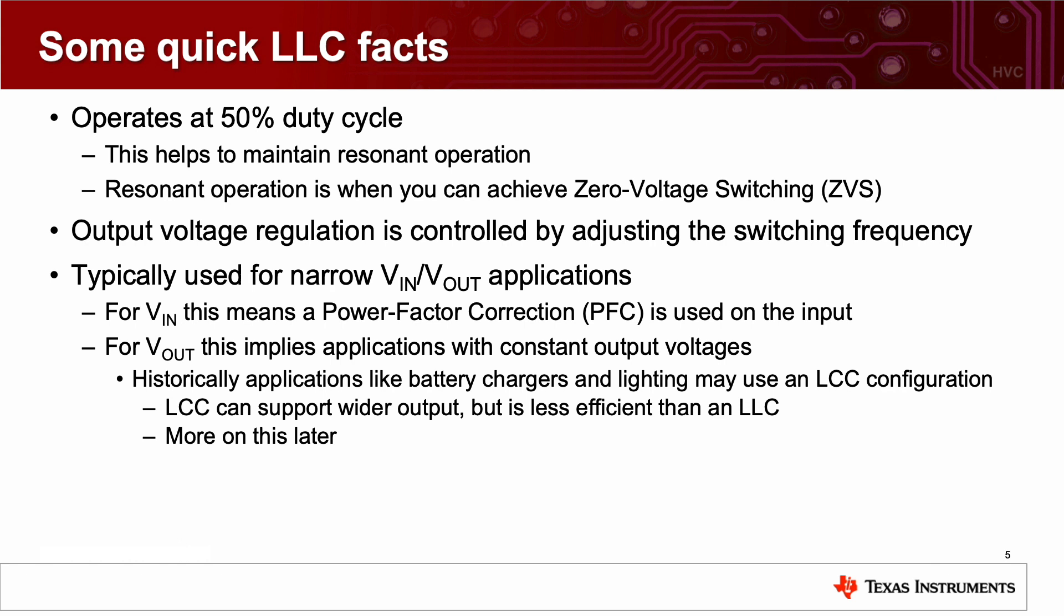For VIN, this means a power factor correction or PFC is used on the input. And for VOUT, this implies applications with fairly consistent constant output voltages. Historically, applications like battery chargers, lighting may switch to an LCC configuration. LCC can support a wider output range, but is less efficient than an LLC topology. I'll be discussing more on this later.